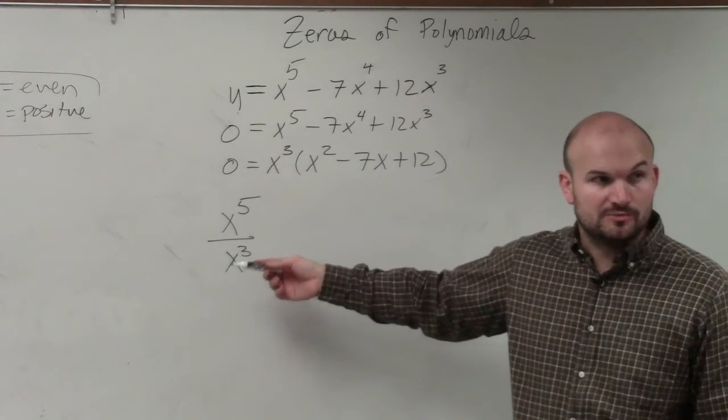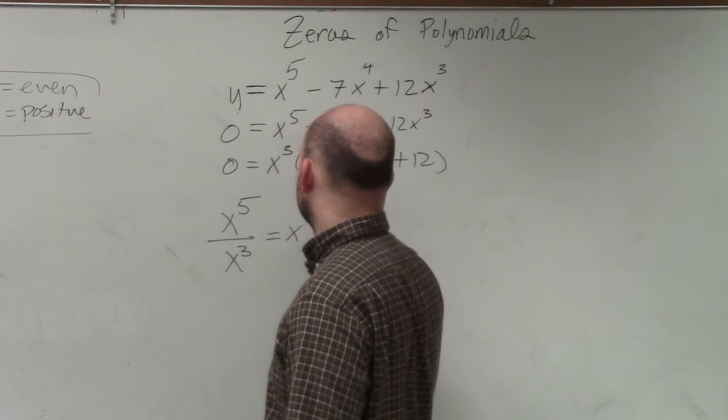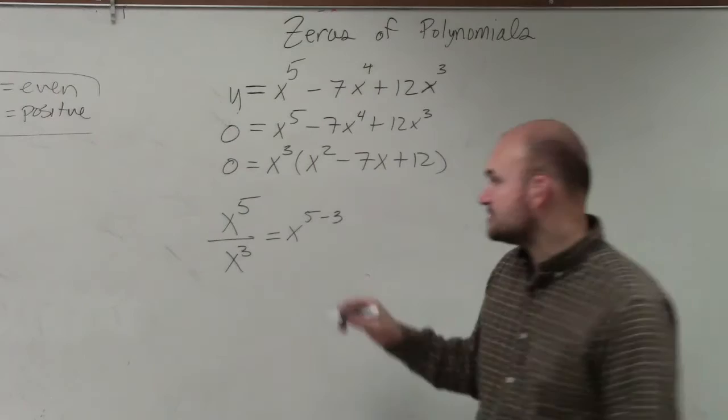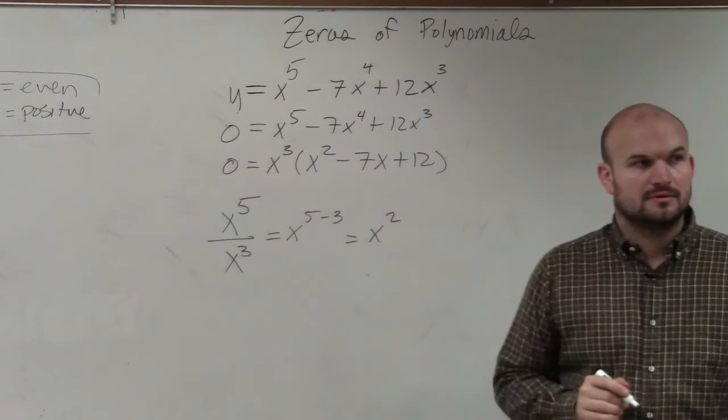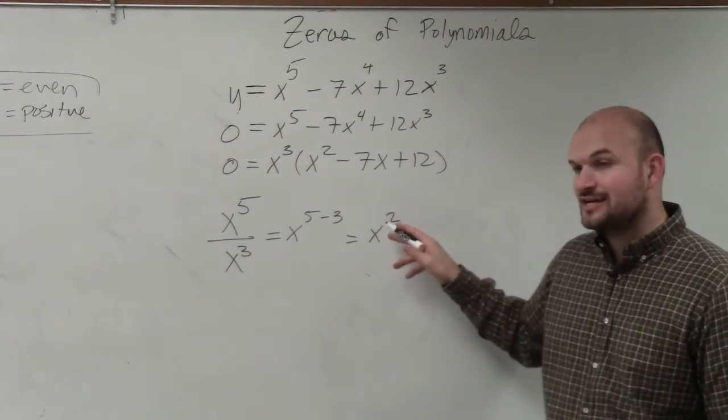So basically, let's look at this. x to the fifth divided by x cubed. Hopefully in algebra one, you guys remember when you're dividing polynomials, or dividing monomials, it's the same thing as subtracting the powers, which is x squared.